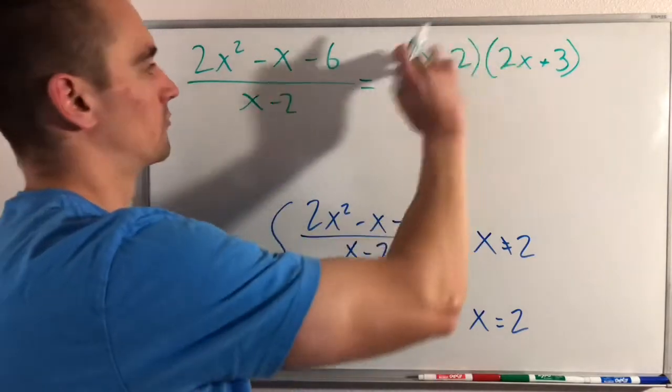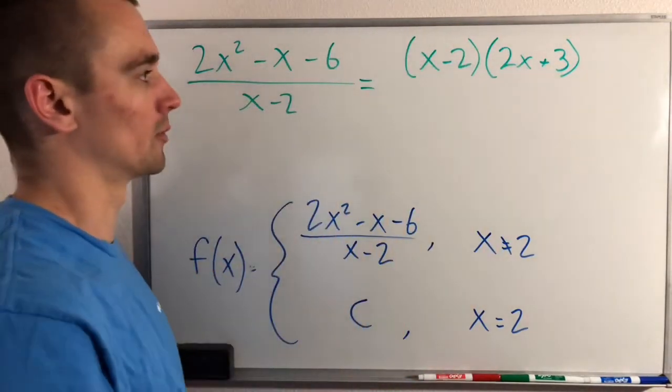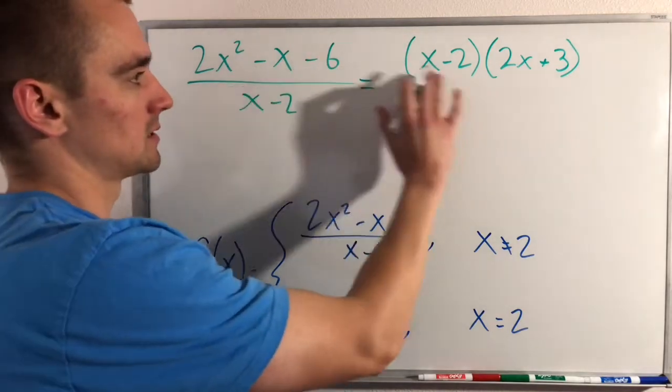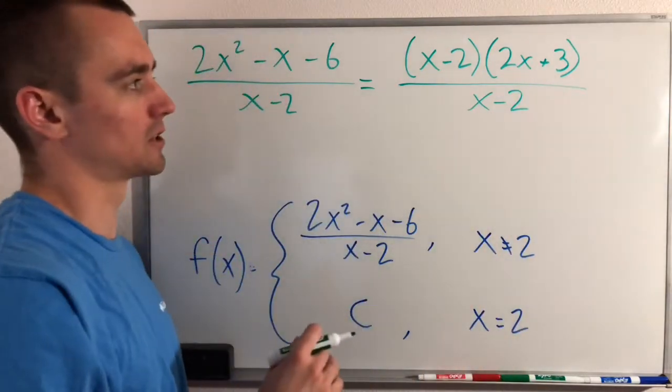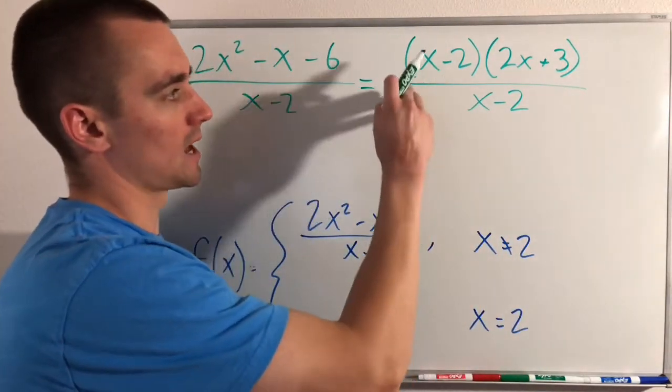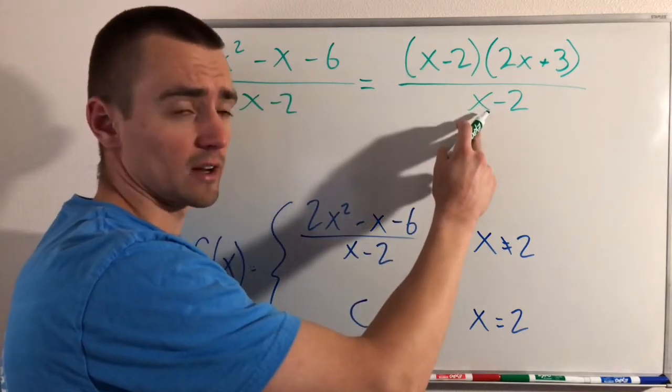So we can think about foiling this out. And if we foiled this out, we would get back to this polynomial here. So this is equivalent to that, and it's all going to be over x minus 2. So let's think about this fraction here for a second. We have an x minus 2 factor on the numerator, and we also have an x minus 2 factor on the denominator.